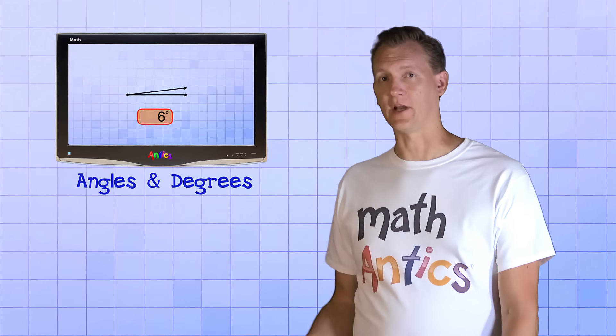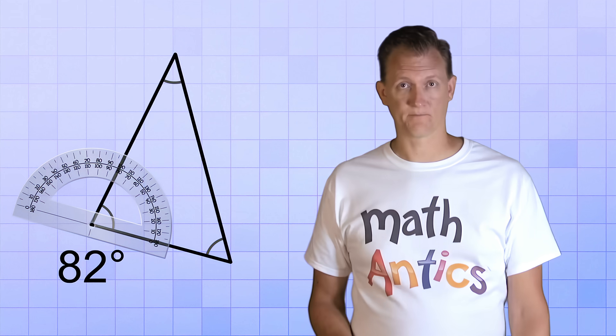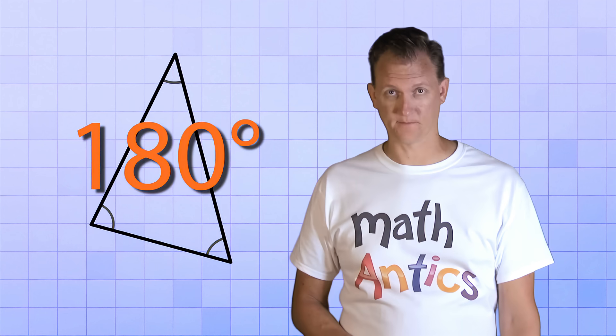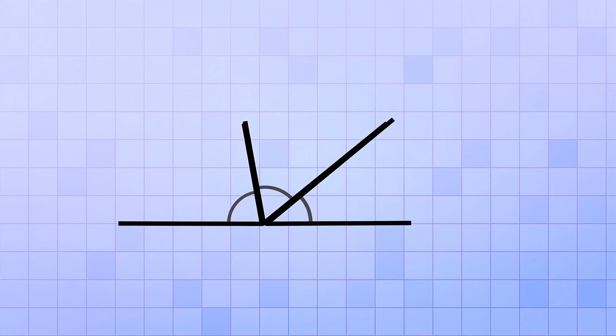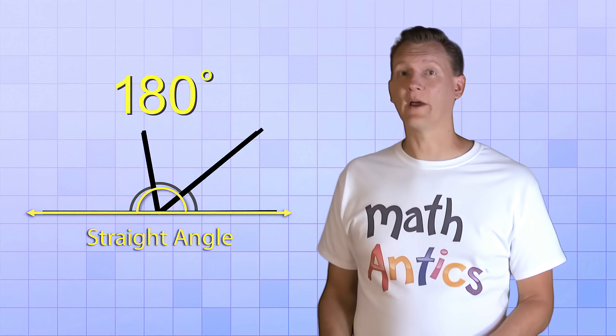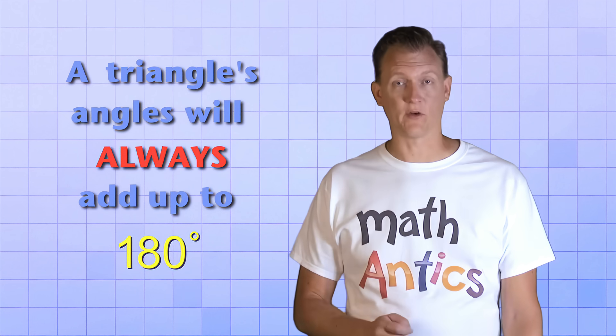Now that you know all about how triangles are classified, let's learn one more really important thing. We learned that we can measure angles using special units called degrees. Since triangles are always made up of three angles, each of those angles has its own measurement in degrees, and those three angle measurements will always add up to 180 degrees. If we take a triangle, cut it up into three separate angles, and rearrange them right next to each other, the total is the same as a straight angle — that's 180 degrees — and this works no matter what type of triangle it is.